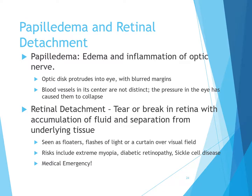Papilledema is edema and inflammation of the optic nerve. The optic disc protrudes into the eye with blurred margins, and blood vessels at its center are not distinct because the pressure in the eye has caused them to collapse. Retinal detachment is an acute condition in which the retina separates from its supporting structures. This separation can occur spontaneously or due to severe nearsightedness, trauma, diabetes mellitus, inflammation, degenerative aging changes, or scar tissue. Retinal detachment occurs when vitreous humor leaks through a retinal tear and accumulates underneath the retina.